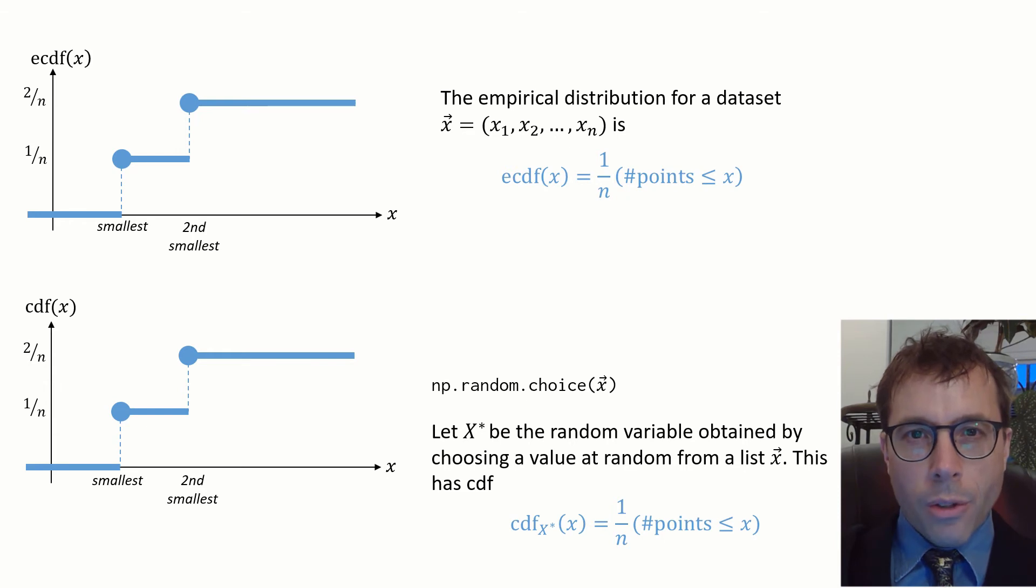It's nothing other than the empirical cumulative distribution function for a dataset. In other words, we've got a random variable which is a perfect match for the dataset's empirical cumulative distribution function.